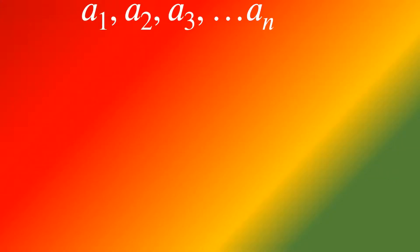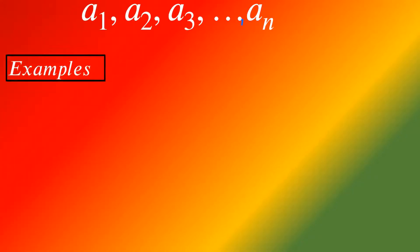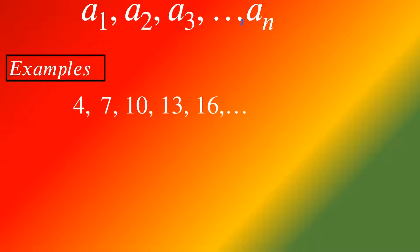Usually the arithmetic sequence is of the form a₁, a₂, a₃, up to aₙ. Let's have some examples of arithmetic sequences. Here we have 4, 7, 10...